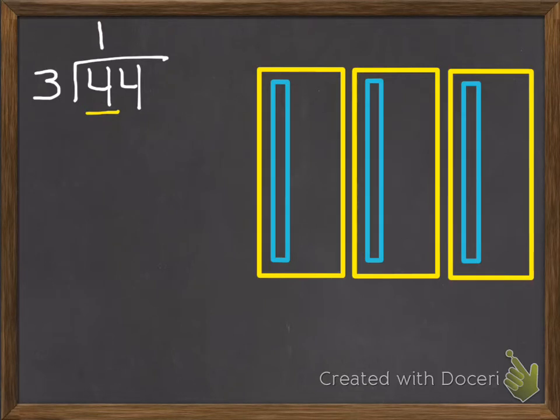Then since we gave 3 groups 1 ten, it means we've passed out 3 of our tens. So we subtract those because we've given them out, which leaves us with 1 ten left. With our pictures, we would then take that 1 ten and divide it into 10 ones. And then we also have these 4 ones that we can add to our 10, which will give us 14 ones.